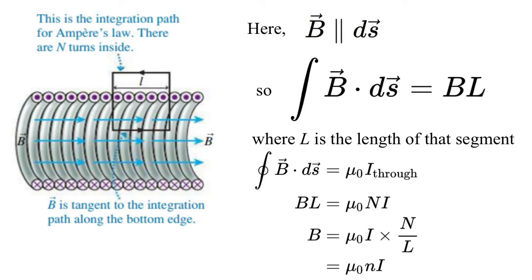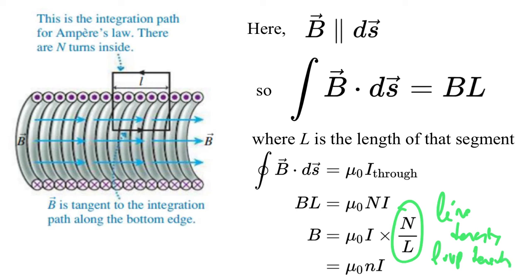Here's an application: solenoids. A solenoid is a tightly wound stack of current loops. Superposition shows that inside the solenoid the loops add, but outside they more or less cancel. With a single loop you get field threading through, but stacking multiple loops, adjacent loops' fields add inside and cancel outside. As we make the loops closer together with more of them, the effect gets sharper and sharper. Eventually we get a uniform field inside and zero field outside.